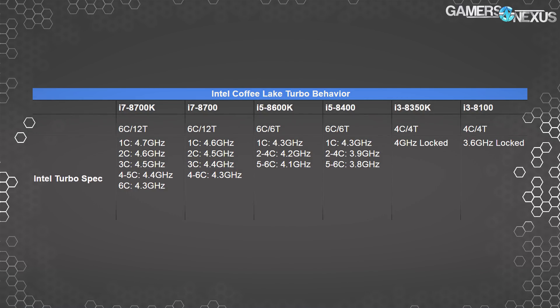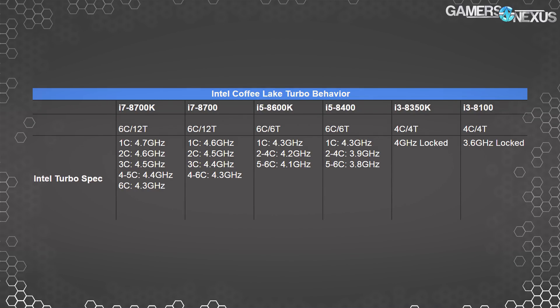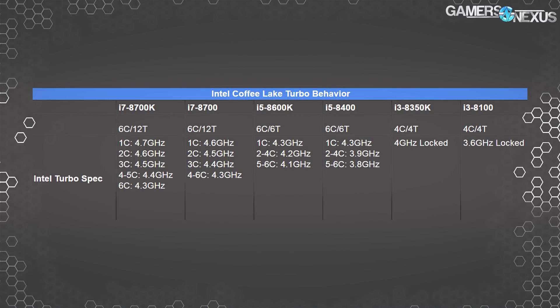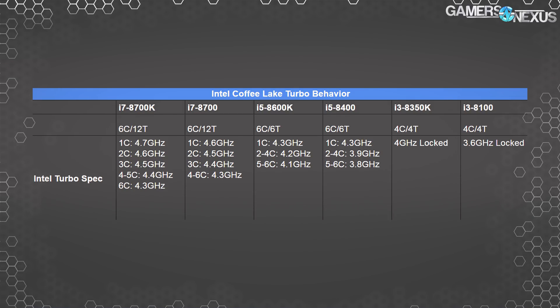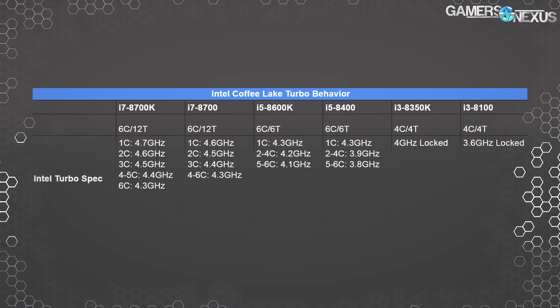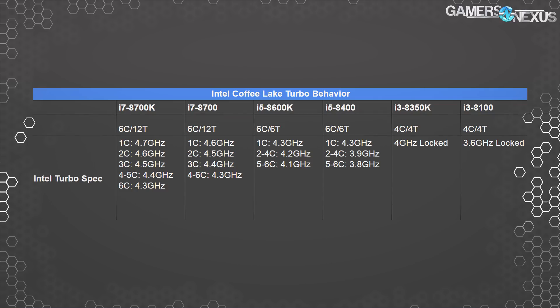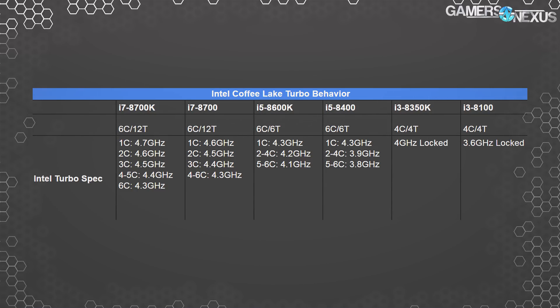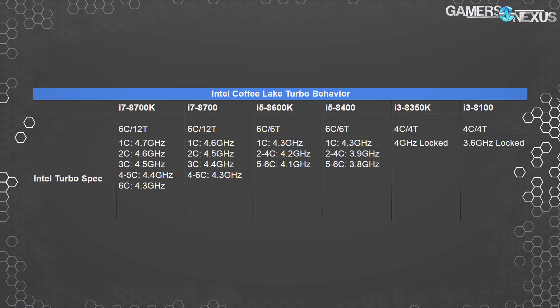Just to get everyone up to speed: the i7-8700 CPU — four to six cores is 4.3 GHz, three core is 4.4 GHz, two core is 4.5 GHz, single core is 4.6 GHz. The 8600K: five-to-six core turbo is 4.1 GHz, two-to-four core turbo is 4.2 GHz, single core 4.3 GHz. The 8400: five to six cores at 3.8 GHz, two to four at 3.9 GHz, and single core at 4.0 GHz. The i3 CPUs just have one speed — there's no turbo.